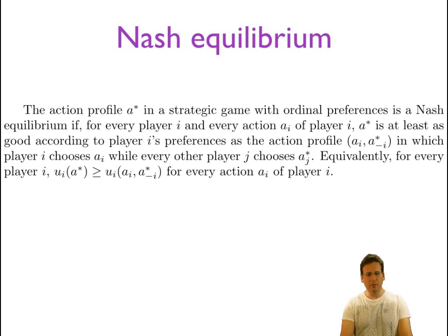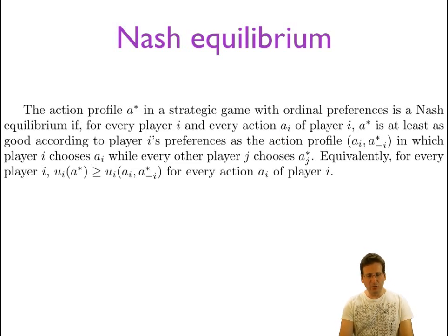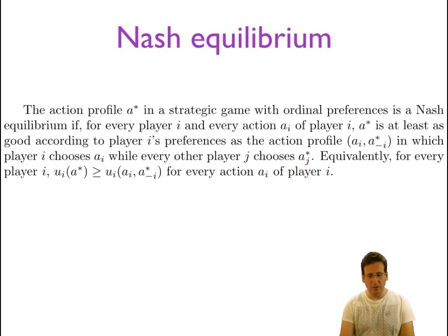A Nash equilibrium is an action profile a star such that for every player i and every action a sub i of player i, a star is at least as good according to player i's preferences as the action profile a sub i, a star not-i, in which player i chooses a sub i while every other player j chooses a star sub j.